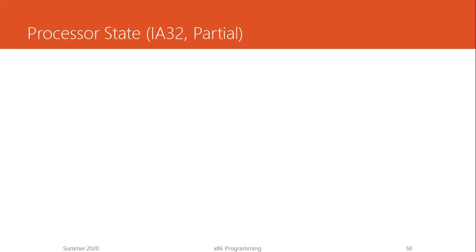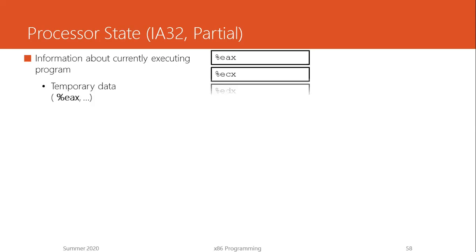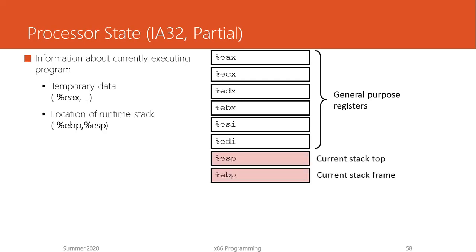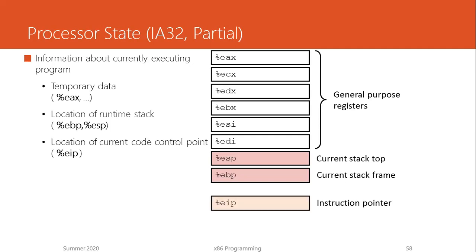Let's have a brief look at the processor state that gives information about the currently executing program. We have registers, which we have used in many examples already. Special registers include the stack pointer and base pointer. The instruction pointer tells us what instruction is going to be executed next — all familiar from our previous videos.